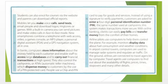In banks, computers store information about the money held by each customer and enable staff to access a large database and carry out financial transactions at high speed. They also control the cash point or ATM — automatic teller machine — which dispenses money to customers by the use of PIN-protected cards. People use a chip and PIN card to pay for goods and services. Instead of using a signature to verify payment, customers are asked to enter a four-digit personal identification number — PIN. P stands for personal, I stands for identification, and N for number. This system makes transactions more secure.